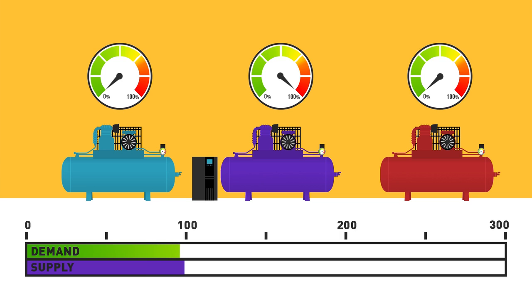When we need more, we switch to our baseline compressor at full speed. Then, we slowly bring the VFD trim compressor back up to meet our need for additional capacity.